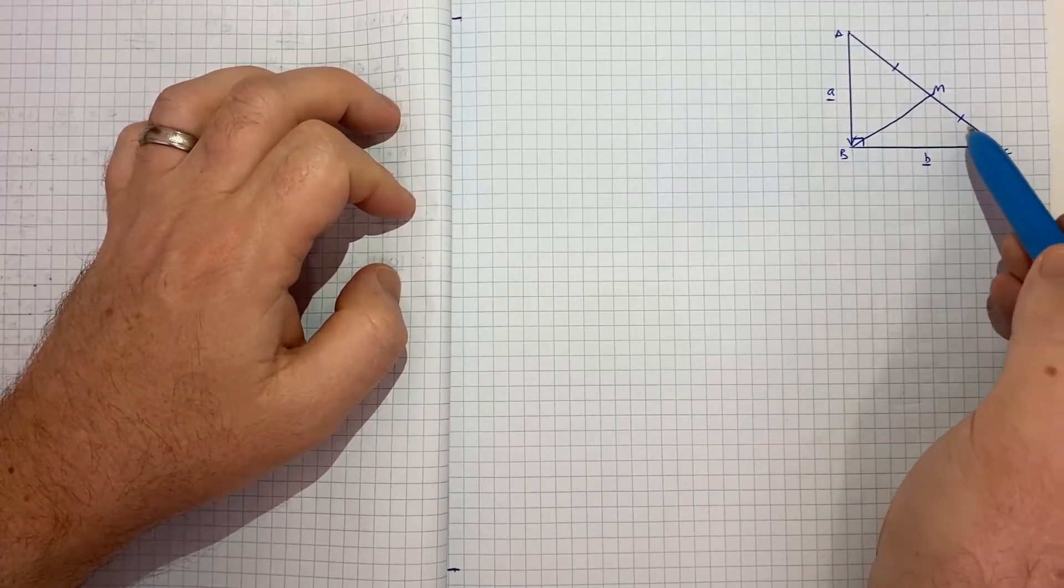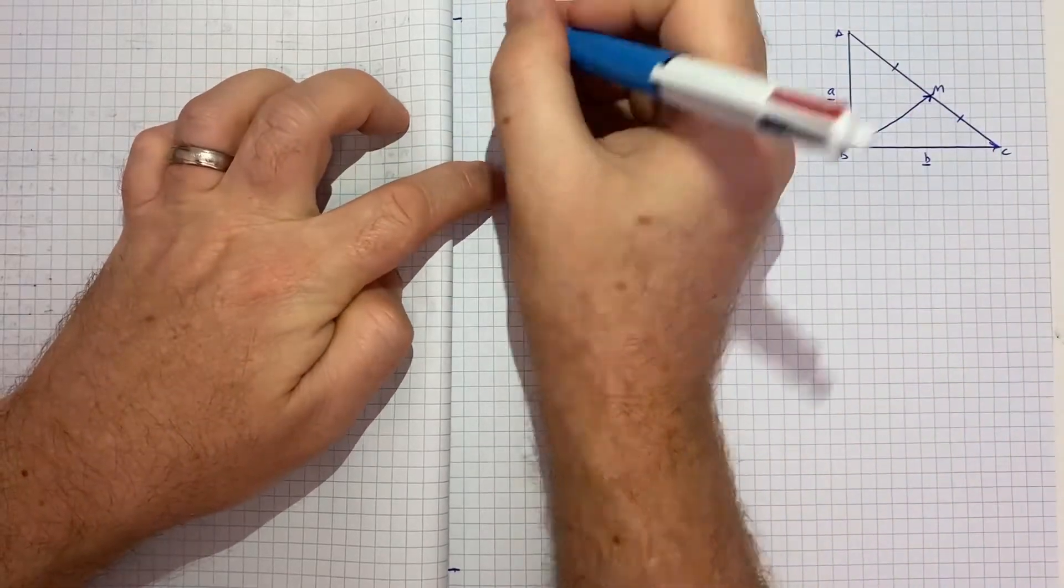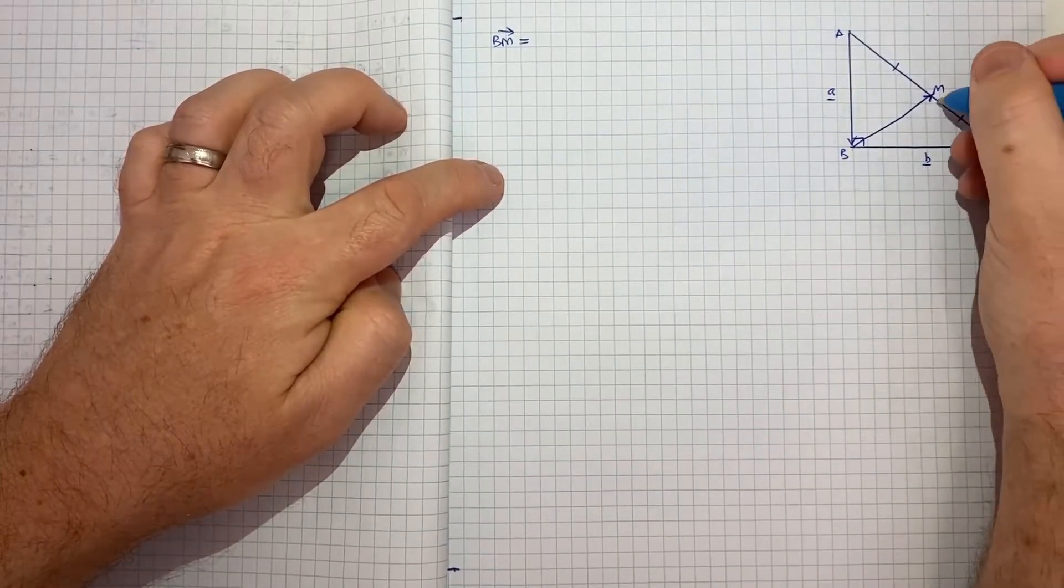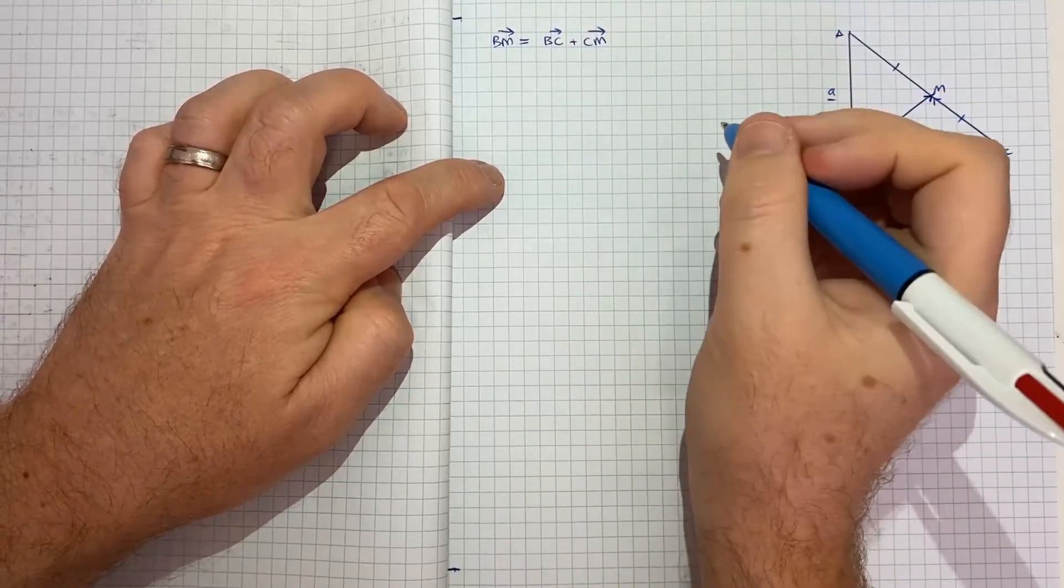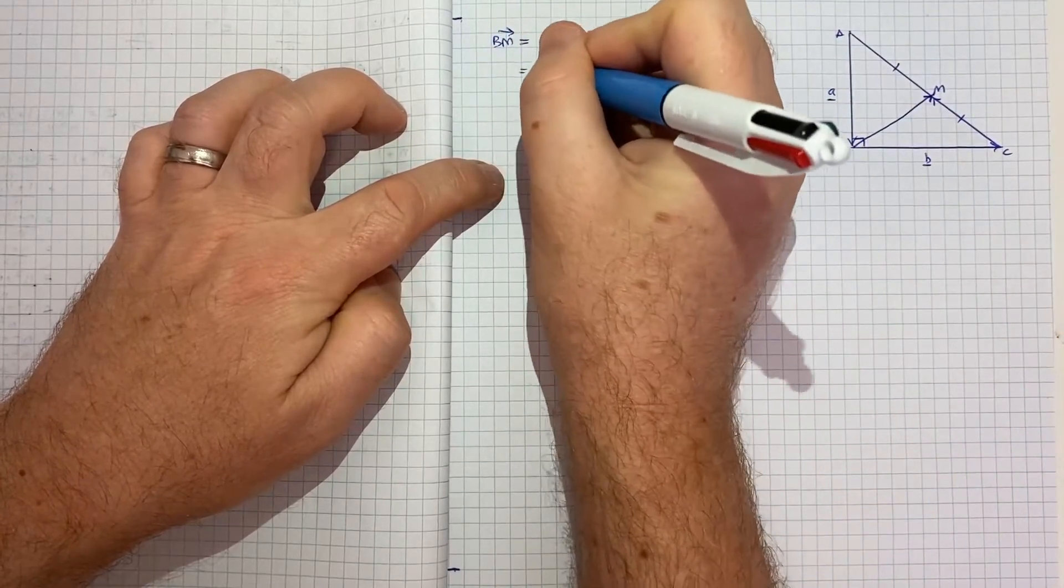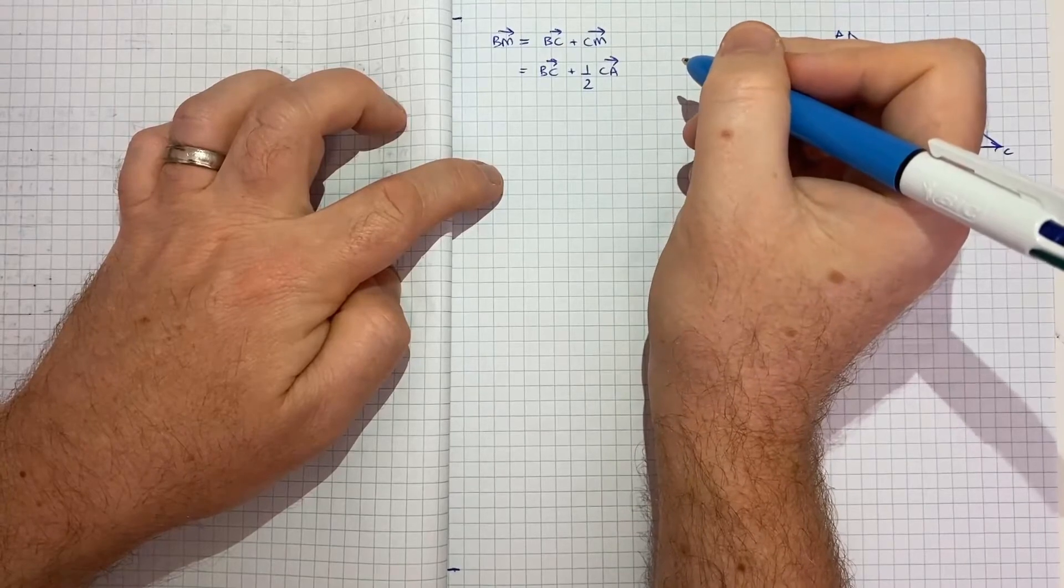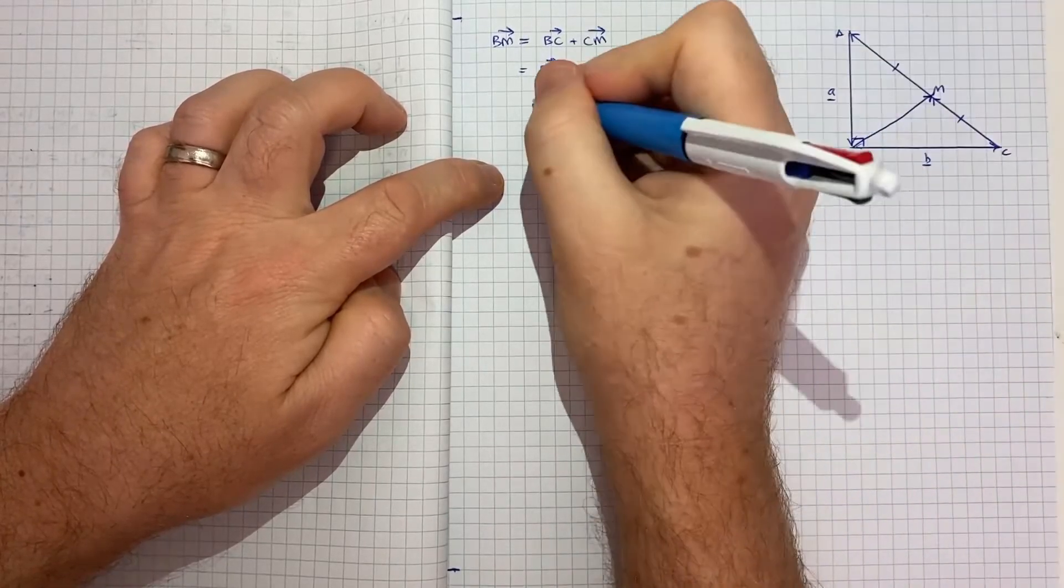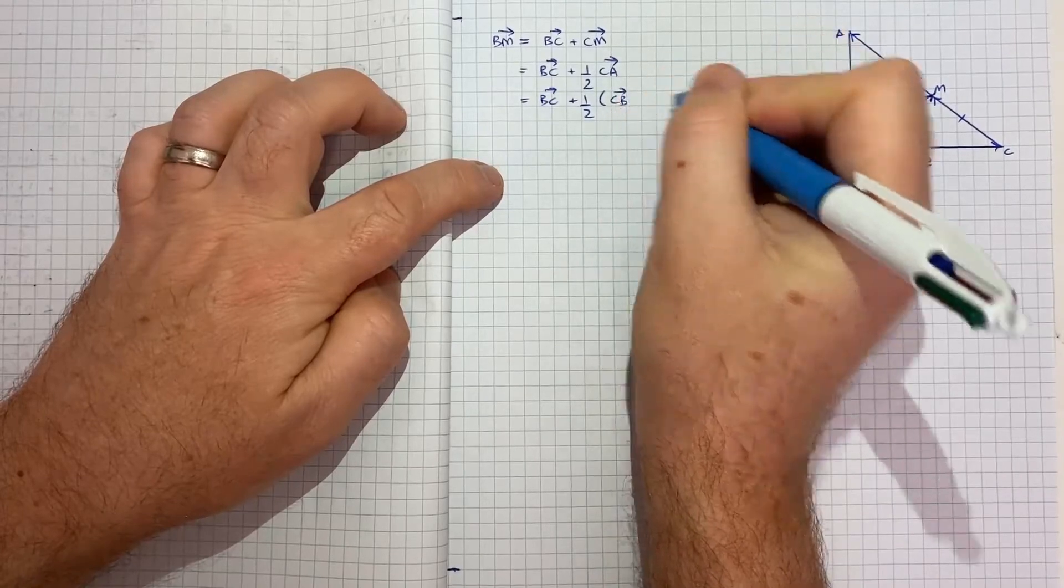I'd say the best place to start, in terms of using vectors to demonstrate what we want to show, I think the best place to start is to consider the vector b to m. Now that vector, to get to b to m, we could go b to c and then c to m. So b to c, c to m. And we know that going from c to m is half of going from c to a. And that's because we're told m is the midpoint.